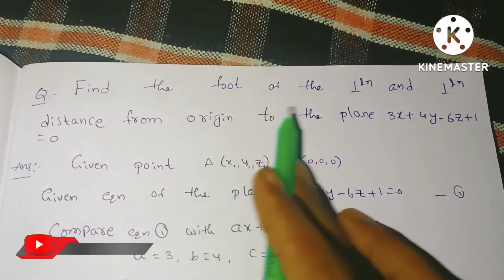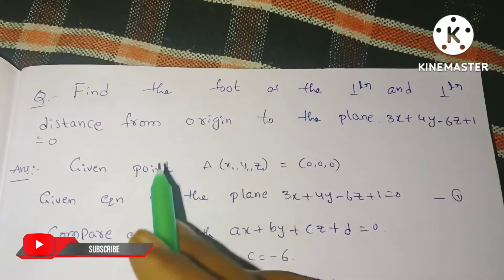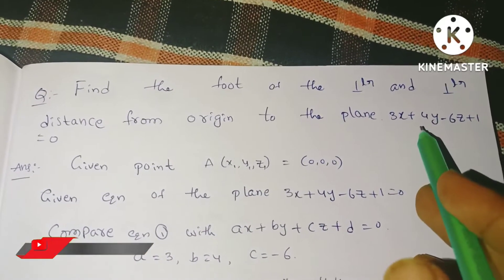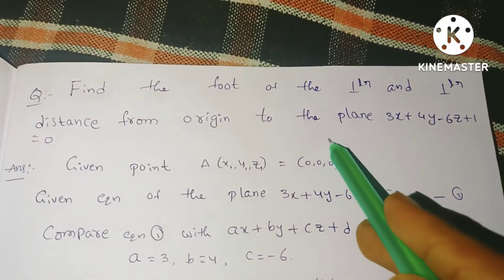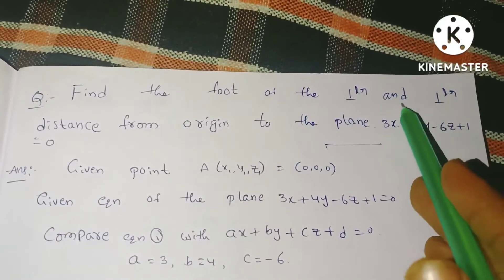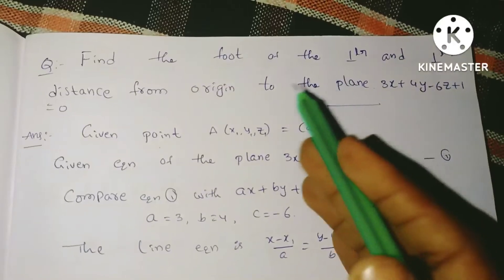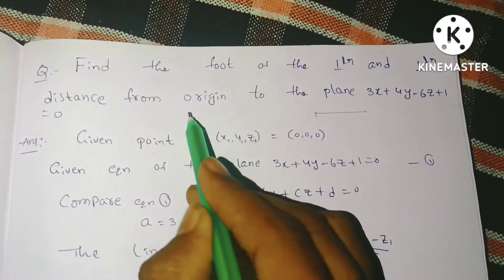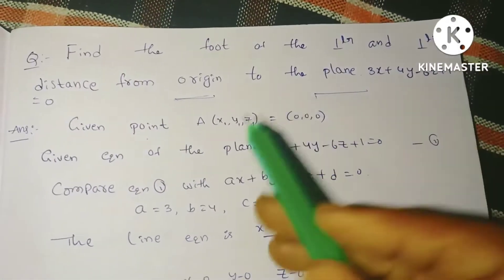Find the foot of the perpendicular and perpendicular distance from the origin R to the plane 3x + 4y - 6z + 1 = 0. The given point is R = (0, 0, 0), so X1 = 0, Y1 = 0, Z1 = 0.